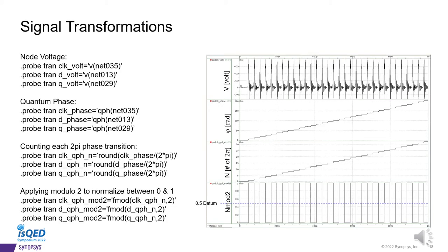In order for HSPICE to perform the kinds of measurements required for logic verification, we must first condition the signals using the following transformations. The first thing we want to do is probe the voltage of the node, from here, the quantum phase, using the QPH command. Next, we will want to convert the phase into counting numbers, the number of 2π-radian phase transitions seen by a particular node. Then finally, perform a modulo-2 operation, so that each switching event can be captured when this transformed signal, which now ranges between 0-1, crosses the datum of 0.5.